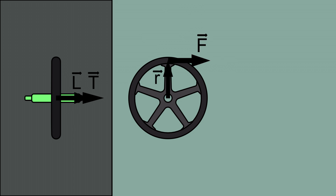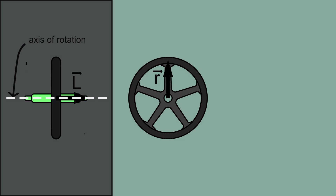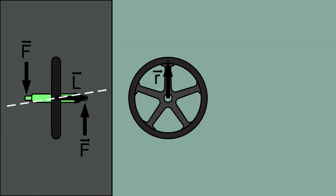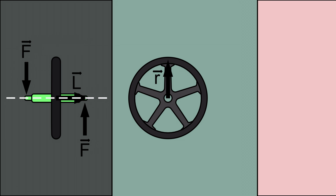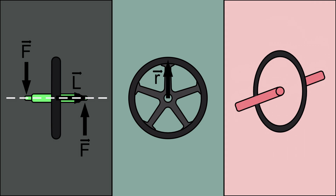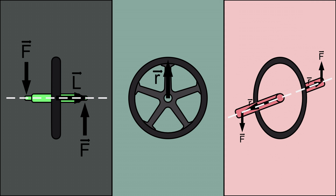Now that the wheel is spinning, we will not be giving any force by hand, and therefore the torque acting on the wheel is now zero. But if the person holding the wheel applies a force to change the axis of rotation of the wheel like this, then the torque applied by both of these forces will be in the direction perpendicular to the axis of rotation of the wheel, as shown here.